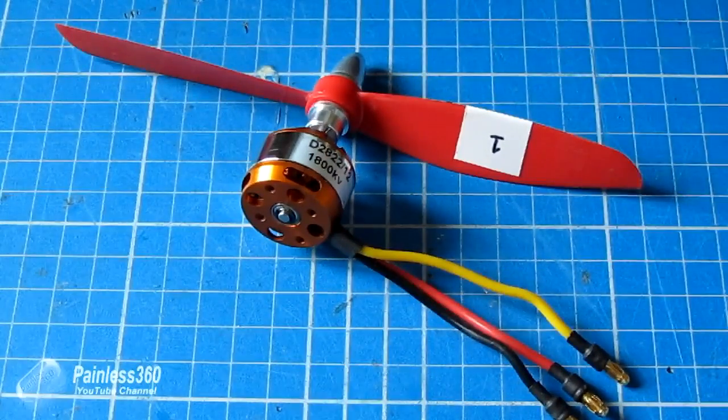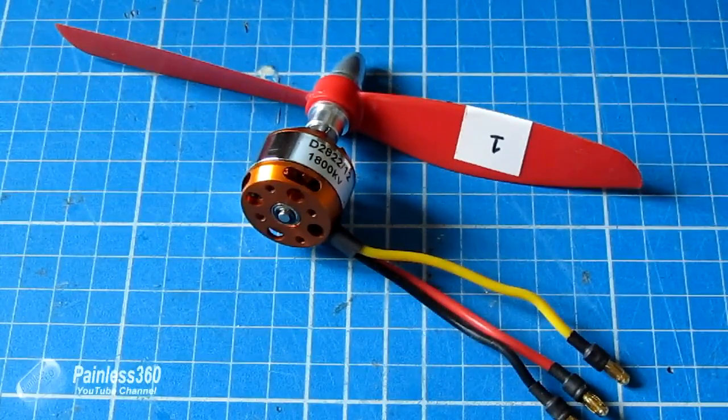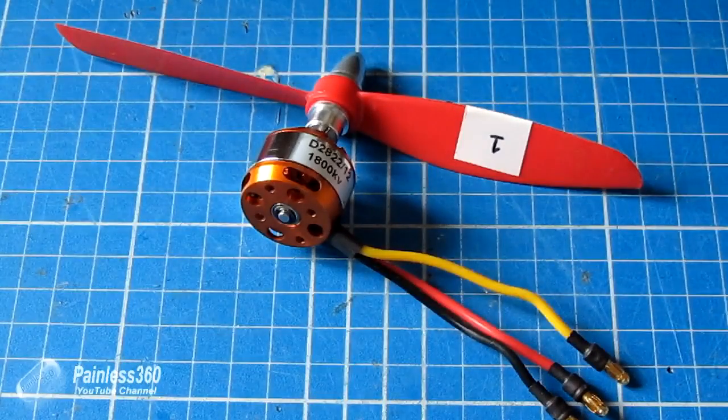So let's go through some numbers and explain what all these bits and pieces actually mean. Here's the motor we'll take you through: it's a 2822-12 1450 kV. What does all that actually mean?